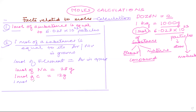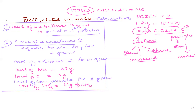When we move to compounds, one mole of a compound equals its Mr (relative molecular mass) in grams. For example, one mole of CH₄ (methane) equals 12 + 4 = 16 grams. One mole of calcium carbonate: calcium is 40, plus 12, plus 16×3 equals 100 grams. So one mole of calcium carbonate equals 100 grams.